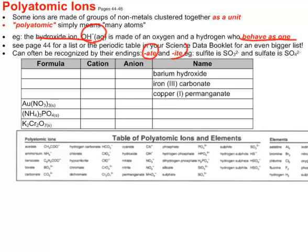They can often be recognized by their endings. Look for words that have -ate or -ite. You've already seen -ide. That means it's periodic table. If you see -ate or -ite, you want to look on the chart of polyatomic ions.